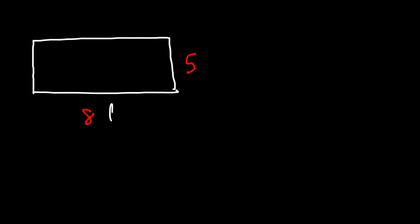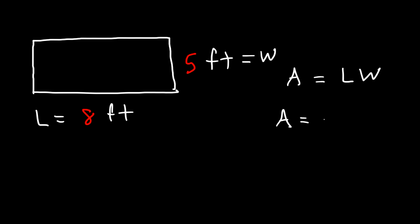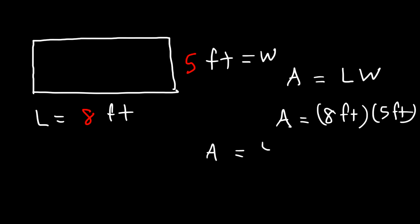In this video we're going to talk about how to calculate the area of a rectangle. Let's say we have an 8 by 5 rectangle — 8 feet by 5 feet. The area is the length times the width, so 8 times 5 is 40. The area is 40 square feet. It's very easy to calculate the area of a rectangle.